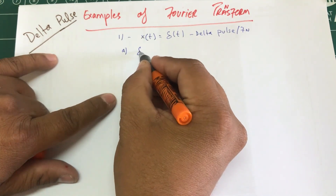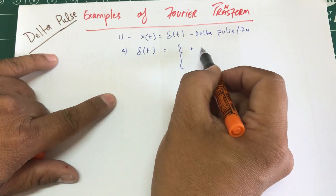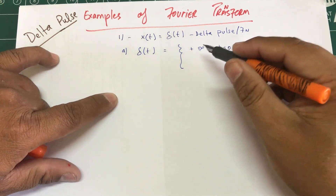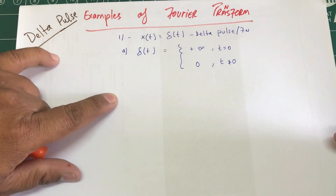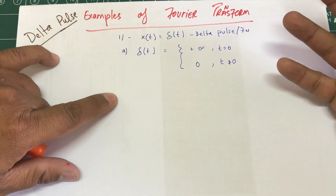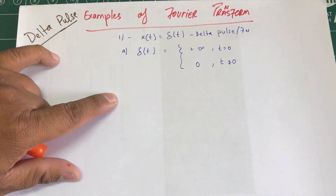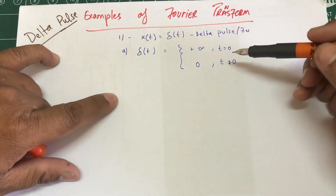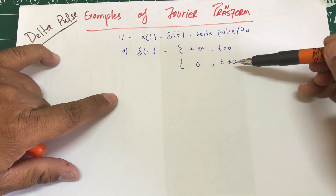The first property of this signal is: delta(t) exists and is equal to positive infinity when t equals zero, and zero for any t not equal to zero. Basically, it's not a real function — it's a made-up function — but it will help us determine the Fourier transform of things we'll need in the future. It's a very useful function.